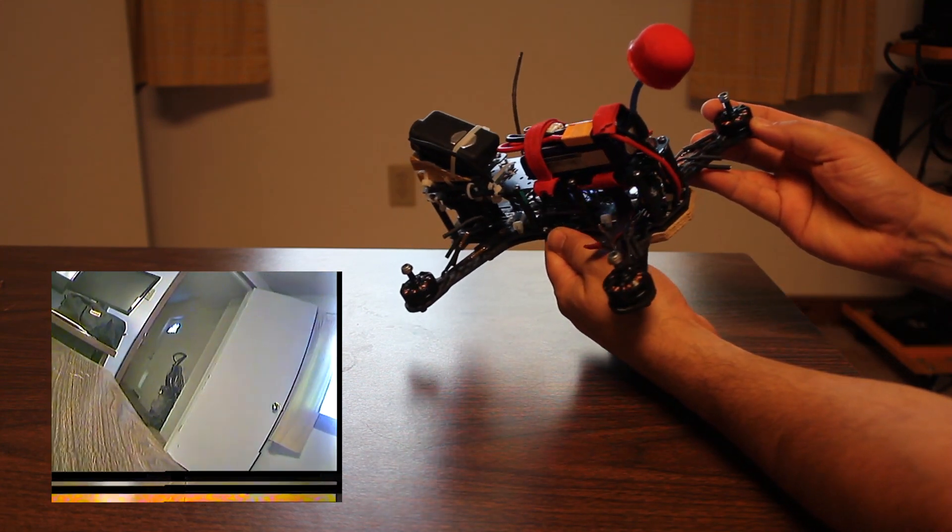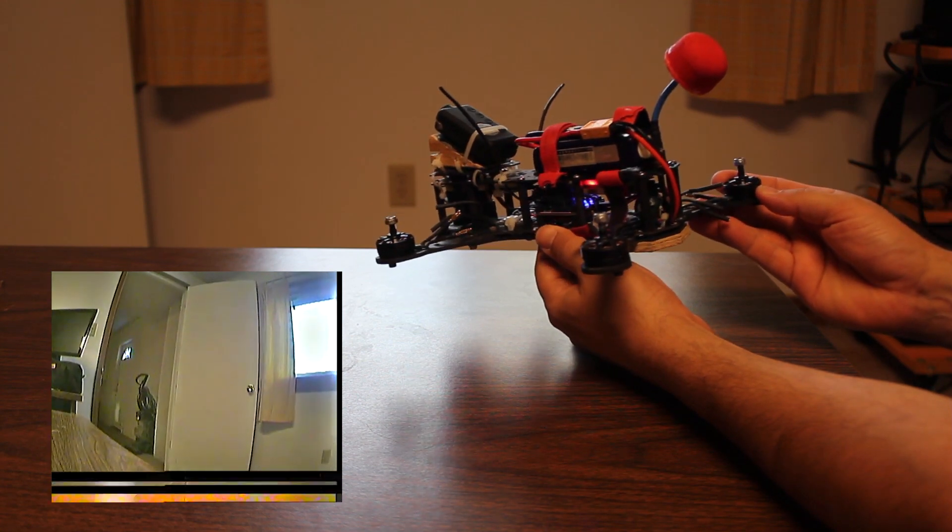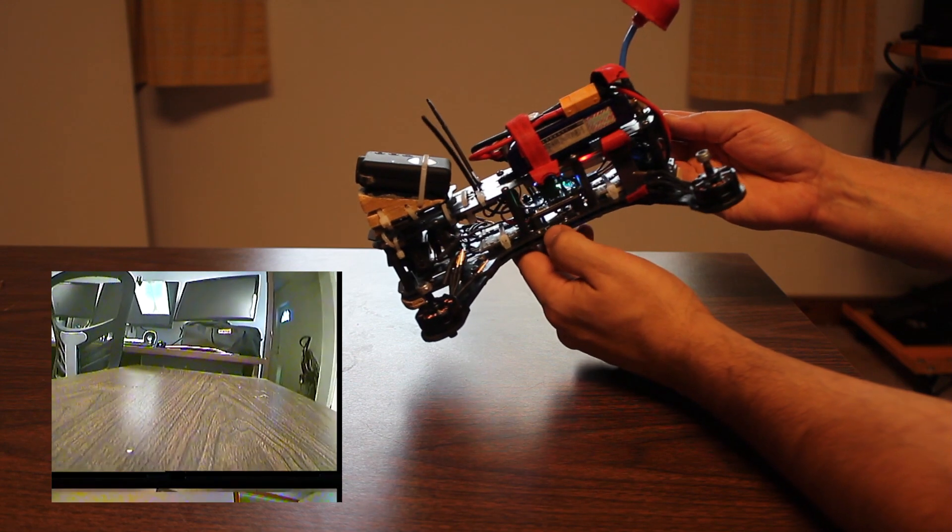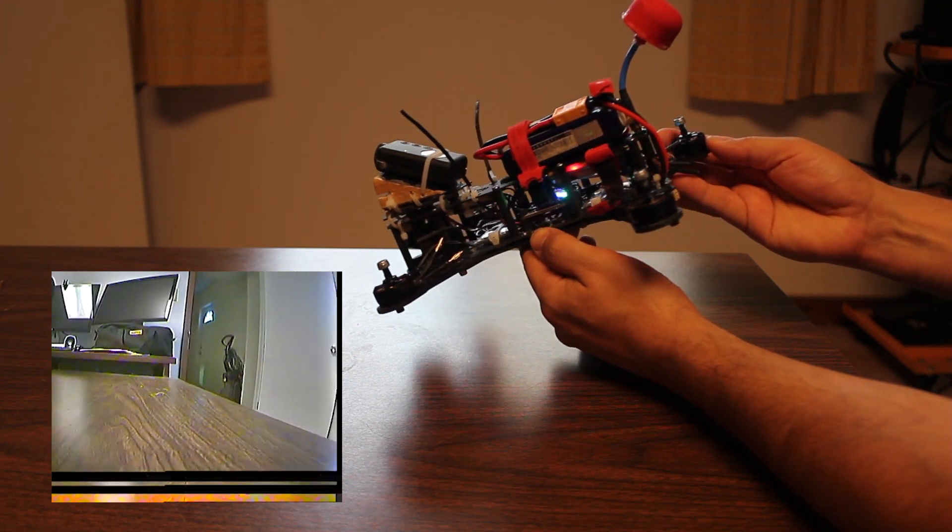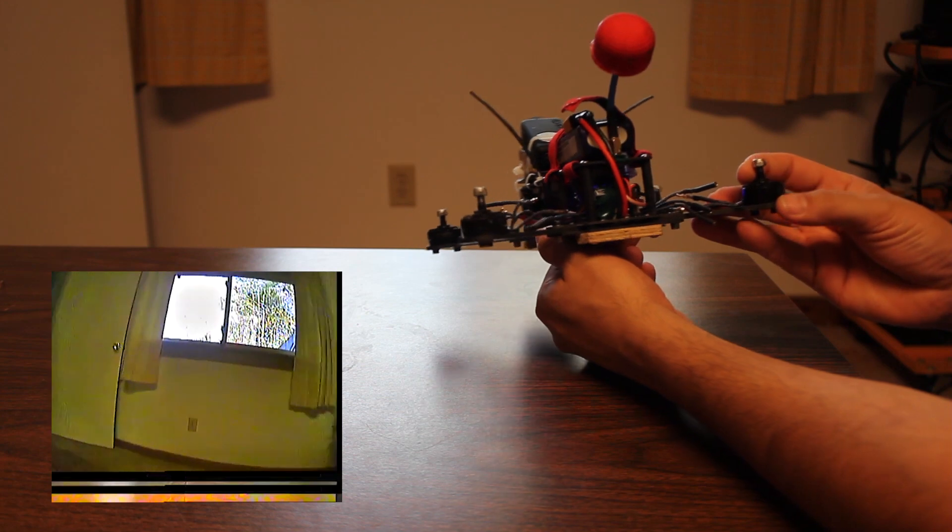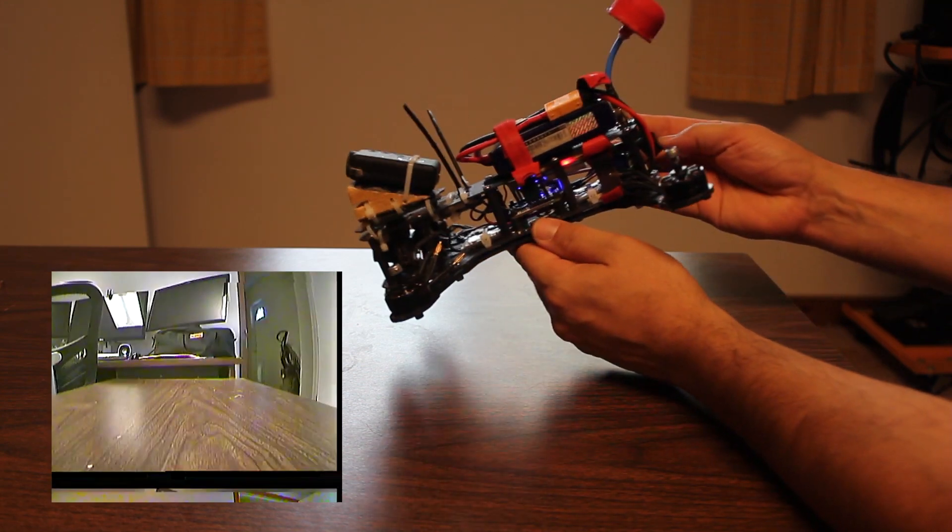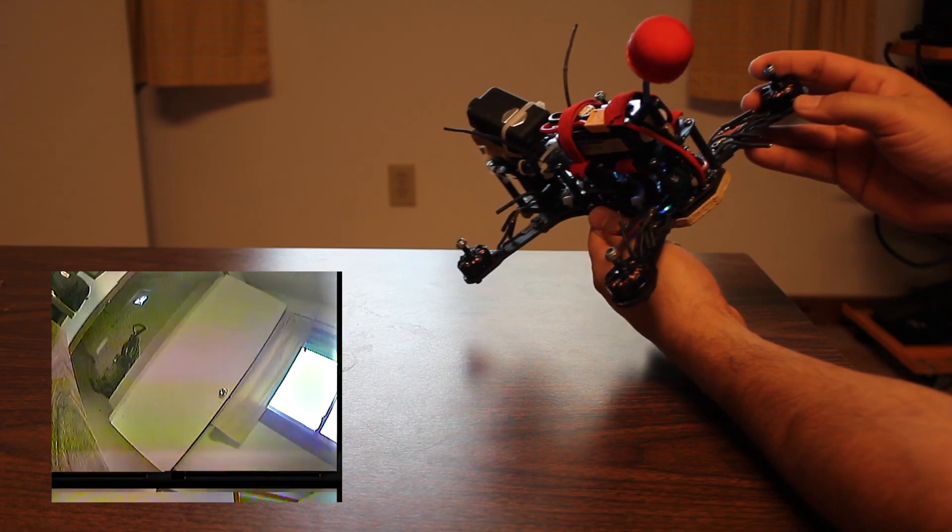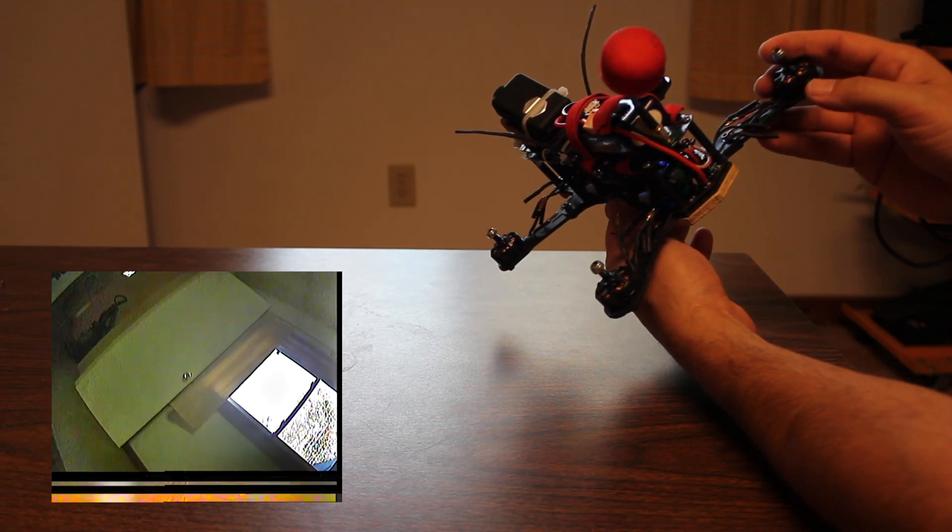As you do that, you'll start to get a feel for how much roll it takes to cancel out the amount of yaw you're putting in. You'll start being able to do them together so that you get a flat turn instead of a turn without enough roll mixed in, which causes the copter to seem like it is rolling out of the turn.